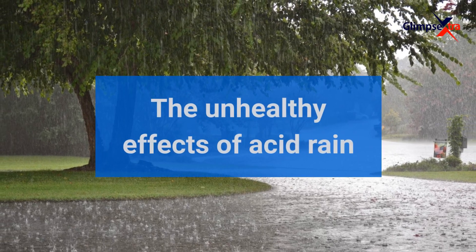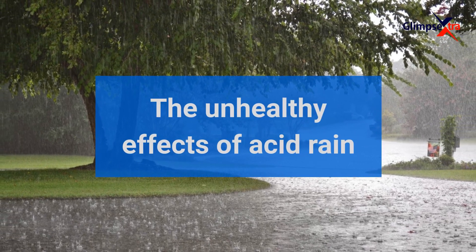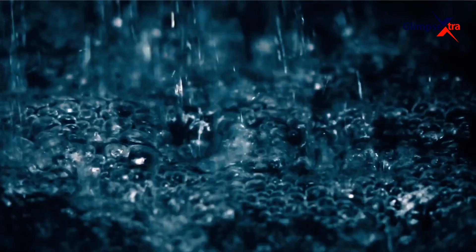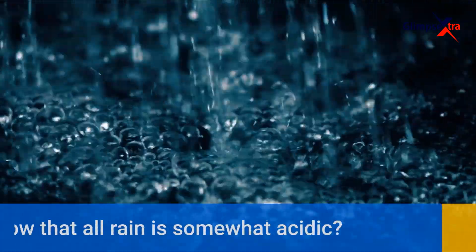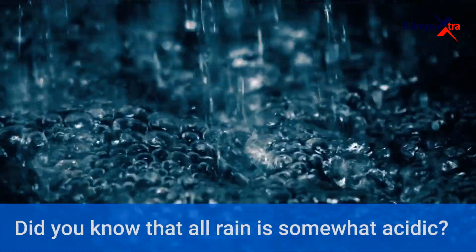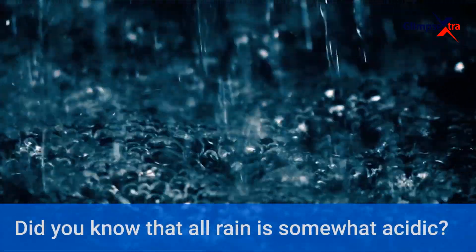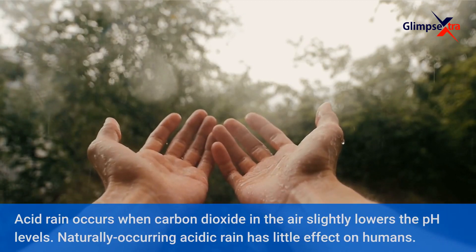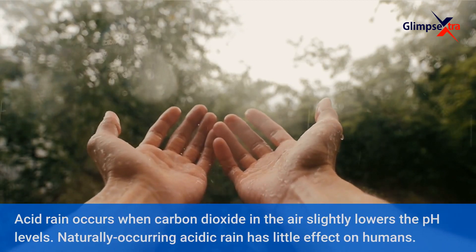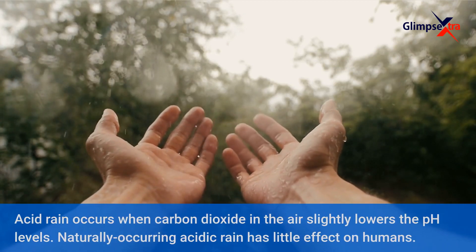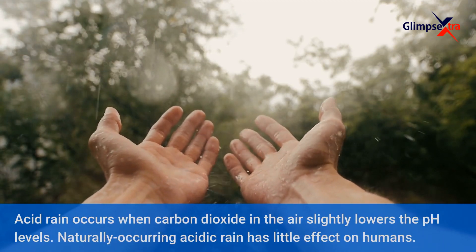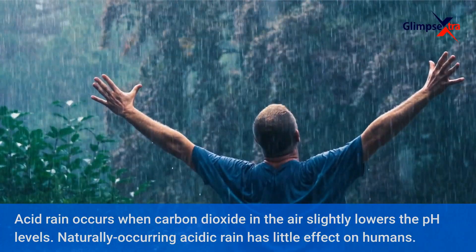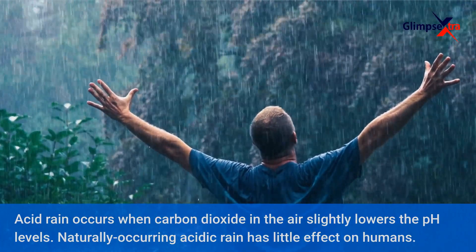The unhealthy effects of acid rain. Did you know that all rain is somewhat acidic? Acid rain occurs when carbon dioxide in the air slightly lowers the pH levels. Naturally occurring acidic rain has little effect on humans.